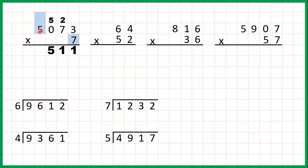Finally, 5 times 7 is 35. We've got nothing to add and we don't have any more digits to the left, so we can just write 35 in our answer line. So our answer is 35,511.